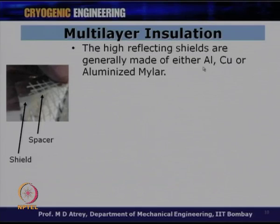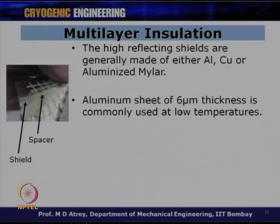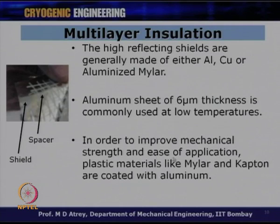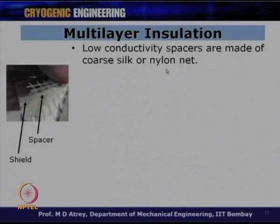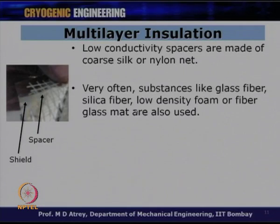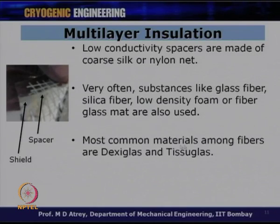The high reflecting shields are generally made of aluminum, copper, or aluminized mylar. Aluminum sheet of 6 micrometer thickness is commonly used at low temperatures. Plastic materials like mylar and kapton are coated with aluminum to improve mechanical strength. Low conductivity spacers are made of coarse silk or nylon net. Substances like glass fiber, silica fiber, low density foam, or fiberglass mat are also used as spacers.